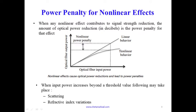Because of this non-linear behavior, for the same amount of applied input power we ideally should have gotten a certain output power, but now due to non-linear behavior we are getting reduced power at the output. This reduction in power is called non-linear power penalty. When any non-linear effect contributes to signal strength reduction, the amount of optical power reduction in decibels is the power penalty for that effect.